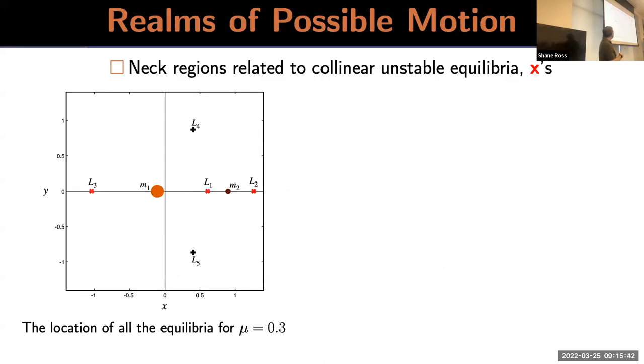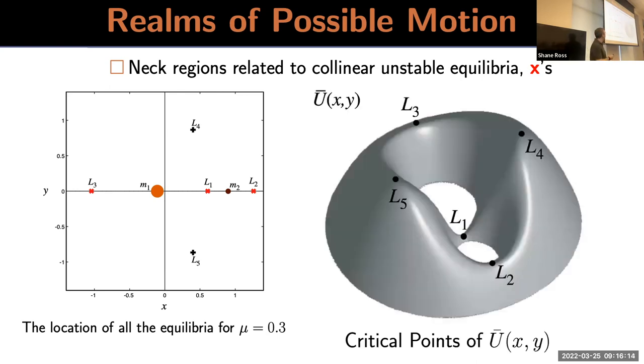As you increase energy further, we get to this situation where L2 opens up, and then L3 opens up. At some point there's no forbidden region anymore. Technically the particle could be anywhere in the plane, although there's invisible structures in phase space governing what's going on. For a pretty large value of the mass ratio, it's 0.3, you can see the Lagrange points. I'm using a convention that's probably different from your textbook. NASA uses this. They say L1 is the point between the two, then L2 is on the other side.